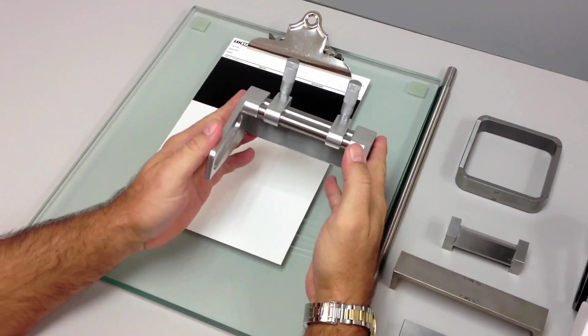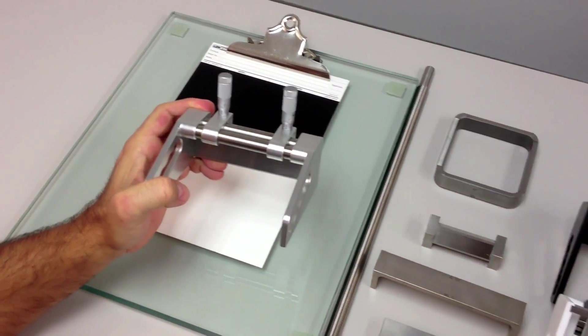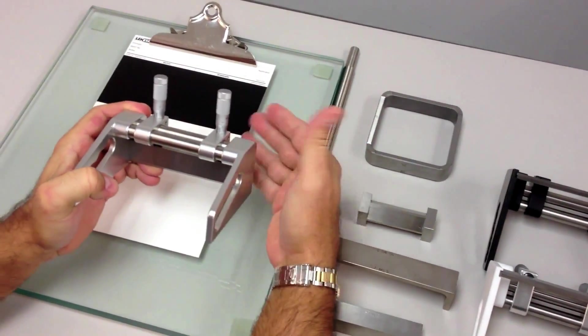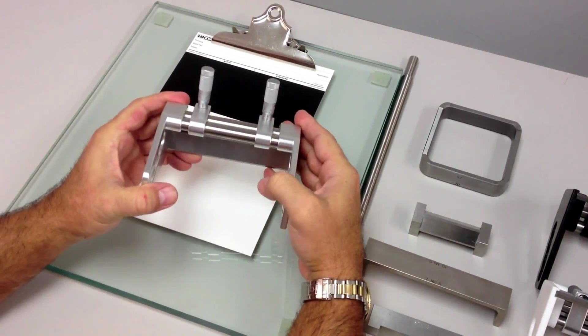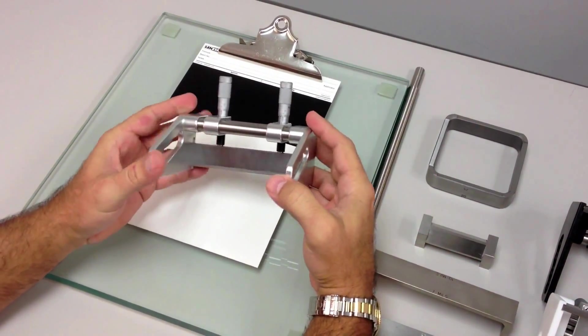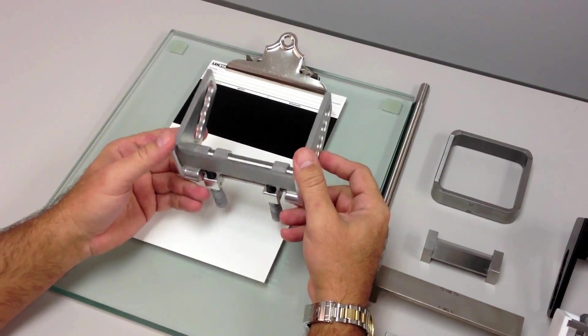Basically you would get one applicator with all the features of a fixed gap plus a range from zero to 250 thousandths gap thickness, which will give you a range between zero and 125 mils wet.